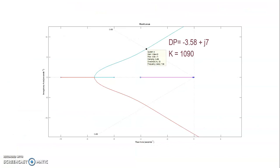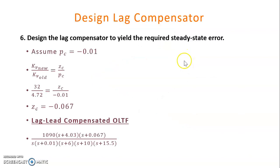This is the MATLAB simulation showing the root locus, using the new dominant pole dp_new and the gain Kkc equal to 1090.